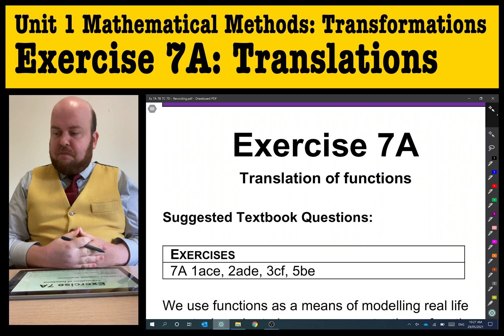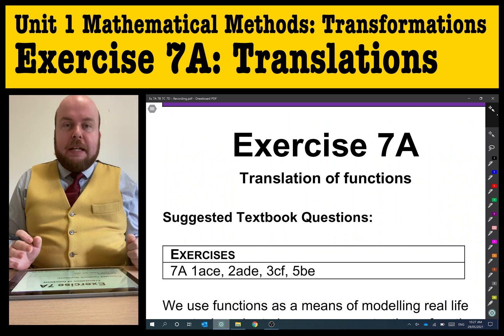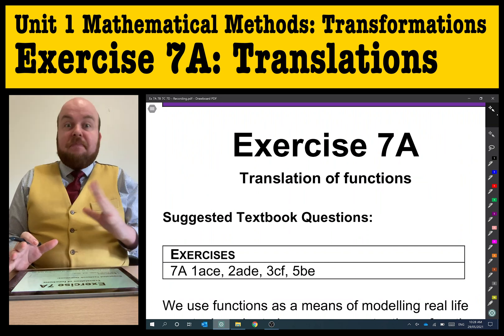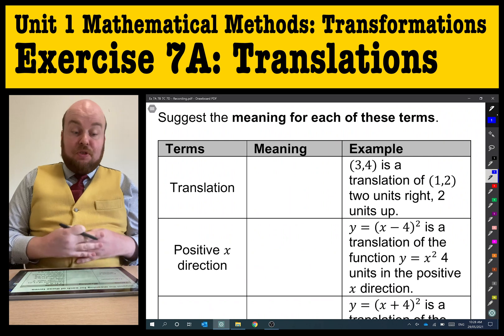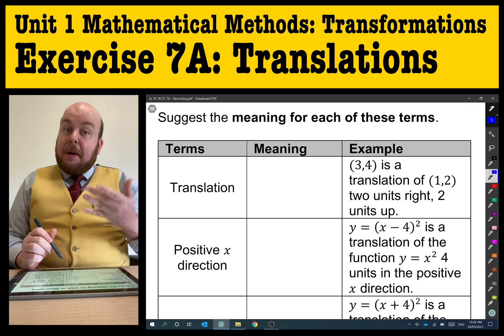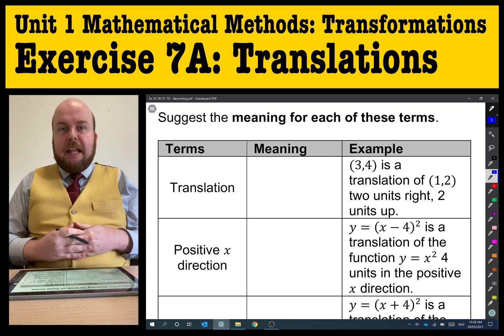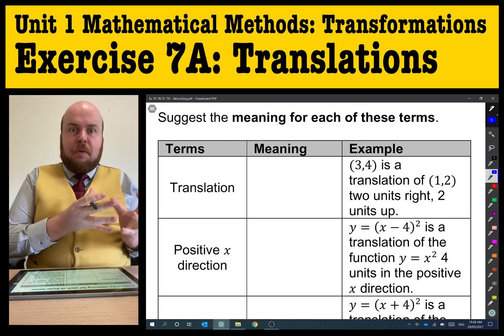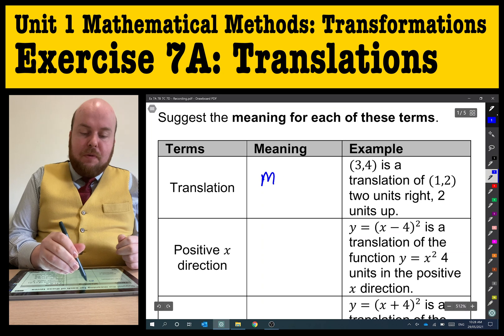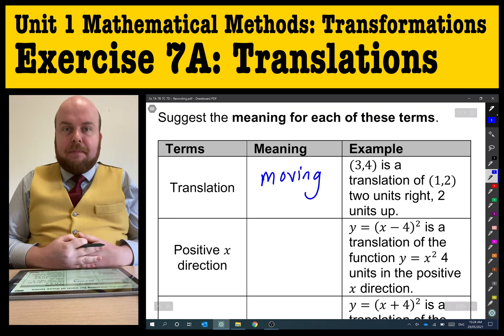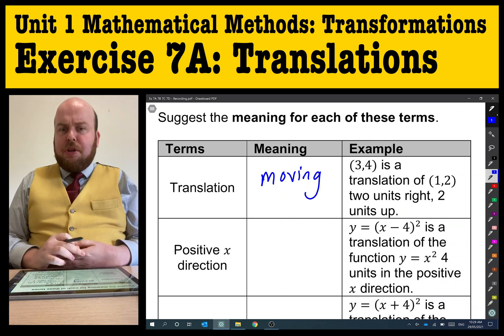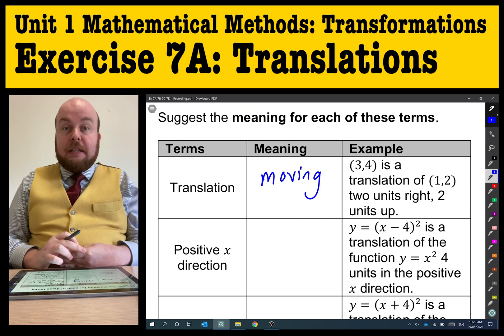There's a lot of different terms and phrases that we need to look at. Today we're going to examine some of that terminology, and then do some examples. The first term is translation. It doesn't mean turning into another language, but if you think about that, if I'm translating to another language, I'm moving the words from one particular language into another. This is exactly what this means. We're moving a particular function. When we translate something, as is the example, the coordinates (3,4) is a translation of (1,2), two units right and two units up.